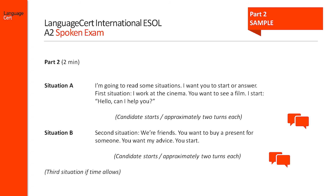Here is an example where the interlocutor sets the following situation: 'I work at the cinema. You want to see a film. I start. Hello, can I help you?' The interlocutor initiates the situation and both the candidate and the interlocutor need to produce approximately 2 turns. Then the interlocutor provides a second situation where this time it is the candidate who has to start. An example might be: 'I work in a restaurant and you want to book a table. You start.' Again, both the candidate and the interlocutor need to produce at least 2 turns.